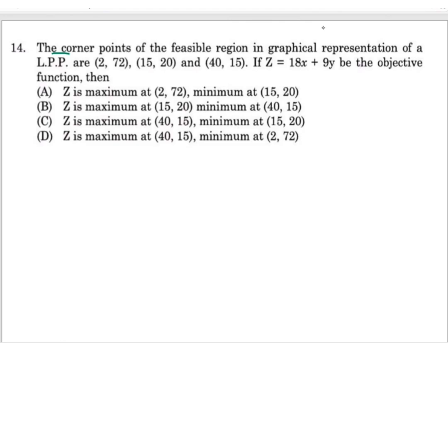So let us find Z = 18x + 9y. We'll take 9 common, it will be 9(2x + y).